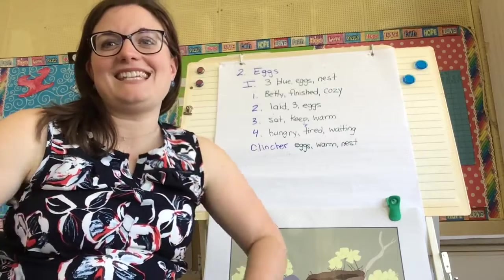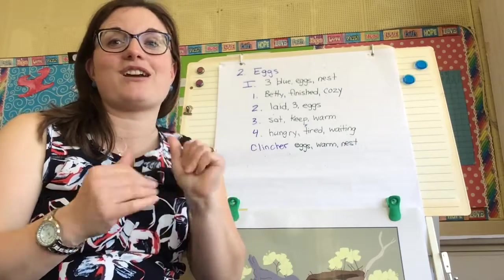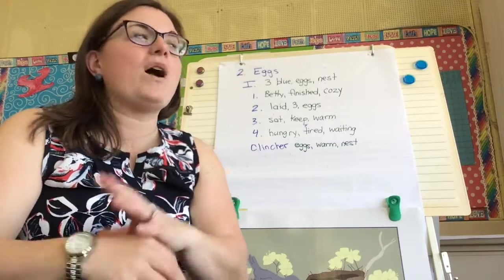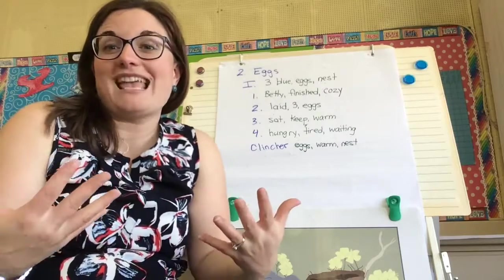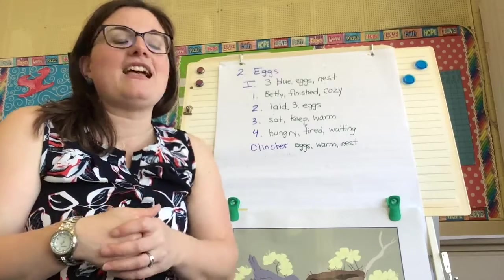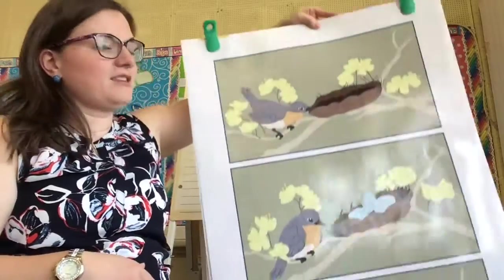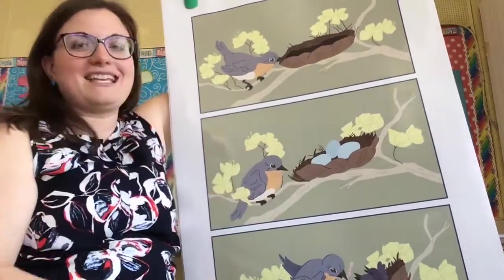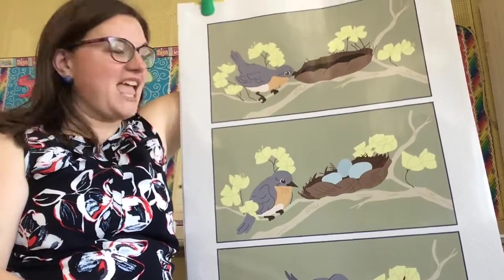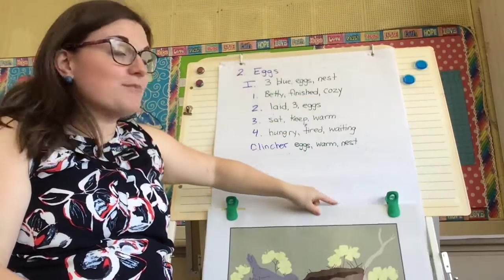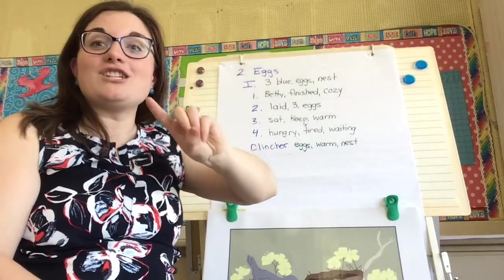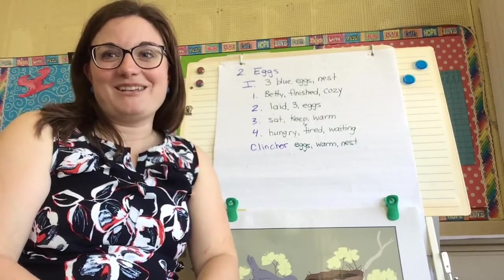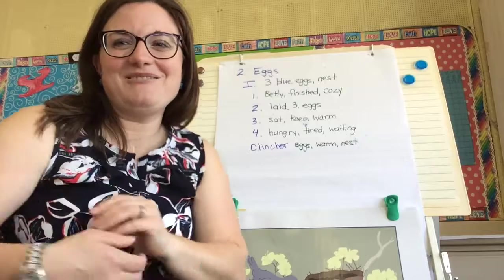Think of your three keywords, or add a symbol or a picture as you need to, to explain when it's happening, what's happening, and where it's happening — all to go with our second picture of our bird and our three blue eggs in the nest. We will see you again tomorrow where we're going to finish our last picture's keyword outline.